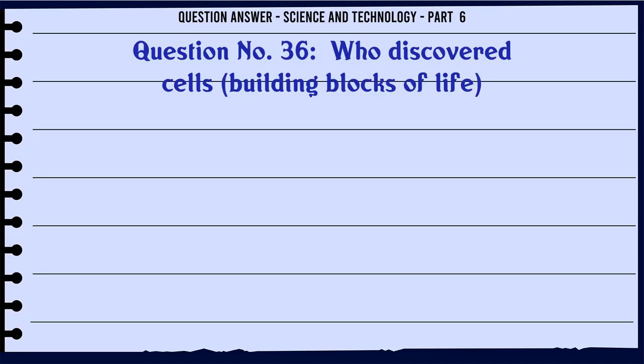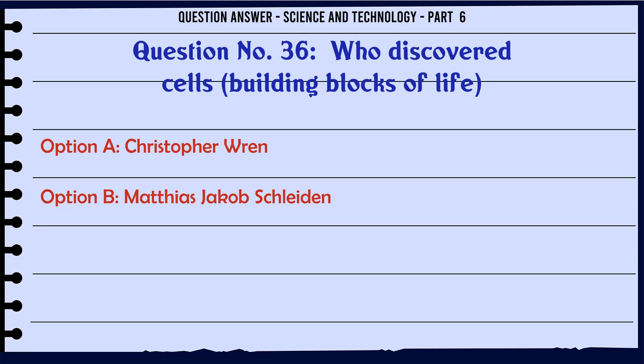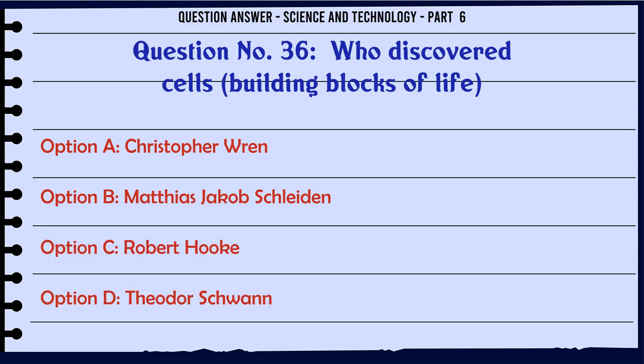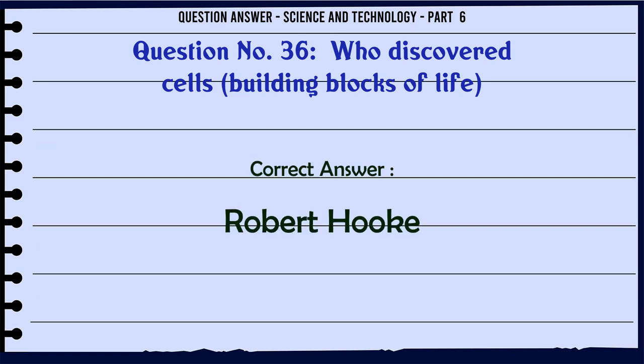Who discovered cells, building blocks of life? A. Christopher Wren. B. Matthias Jacob Schleiden. C. Robert Hooke. D. Theodor Schwann. The correct answer is Robert Hooke.